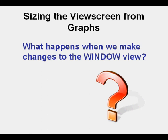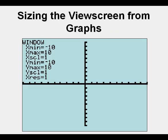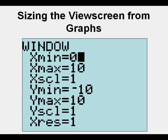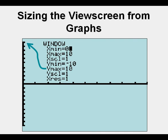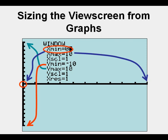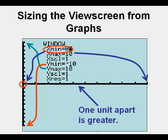Now we're going to look at what happens when we make changes to the window view. We're going to take the x-min value and change it from negative 10 to 0. When we press graph, it dramatically changes the dimensions of our view screen. Instead of having quadrants 1, 2, 3, and 4, we've eliminated quadrants 2 and 3 — nothing to the left of the y-axis. Now instead of 20 units across, we only have 10 units, so x-values appear larger.